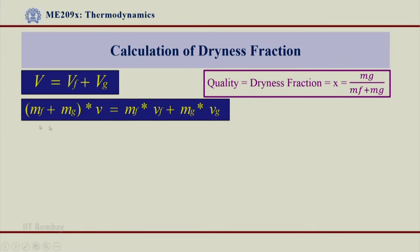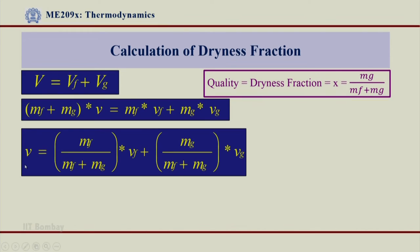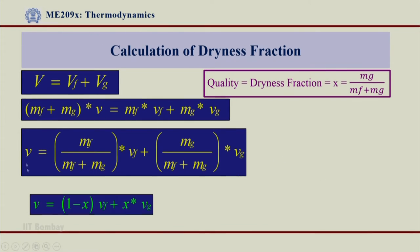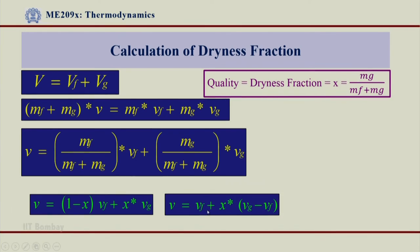Now if I divide this equation by Mf plus Mg, I will get the next expression: V equals Mf over (Mf plus Mg) times Vf, plus Mg over (Mf plus Mg) times Vg. The bracket Mg over (Mf plus Mg) is nothing but the x value, and Mf over (Mf plus Mg) is 1 minus x. Because Mg represents x, Mf will represent 1 minus x when divided by total mass. So I can write this equation as: the specific volume of a two-phase mixture equals (1 minus x)·Vf plus x·Vg. Rearranging, I get V equals Vf plus x·(Vg minus Vf) — a very important expression.